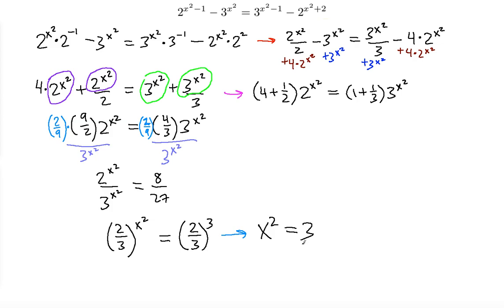Since the bases are the same — both (2/3) — and there is an equal sign, the exponents must be equal. So x² = 3, which means x = ±√3. There are two solutions. Since x is always squared in the original equation, if the positive radical 3 is a solution, the negative radical 3 will also work — squaring either gives the same result.